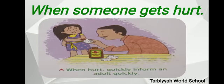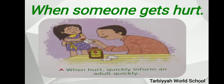When someone gets hurt — sometimes, even if we are careful, we might get hurt. If we get hurt, we should not be scared. We should tell our teachers or parents at once. If someone gets hurt in school, do not crowd near them — quickly inform your teacher about it. Whenever someone is hurt, inform an adult quickly, and if you are in school, inform your teacher.